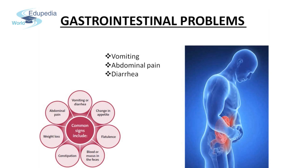People who have gastrointestinal problems generally have problems in this entire process — the food is not properly digested, and even if digestion takes place, the nutrients don't reach the blood. Some of the symptoms of gastrointestinal problems are vomiting, abdominal pain, and diarrhea. These are the common signs of gastrointestinal problems.